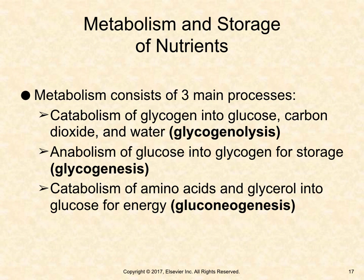Metabolism consists of three main processes: catabolism of glycogen into glucose, carbon dioxide, and water, called glycogenolysis; anabolism of glucose into glycogen for storage, called glycogenesis; and catabolism of amino acids and glycerol into glucose for energy, called gluconeogenesis.